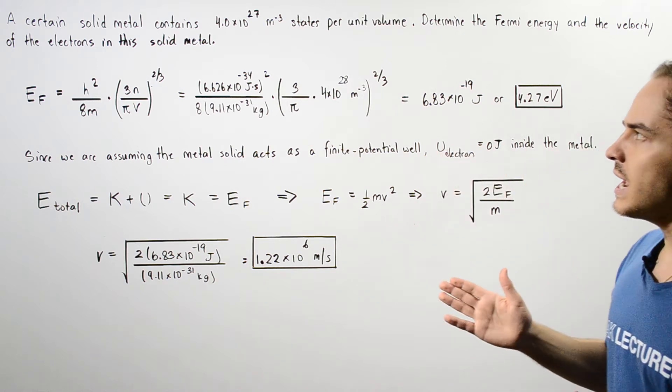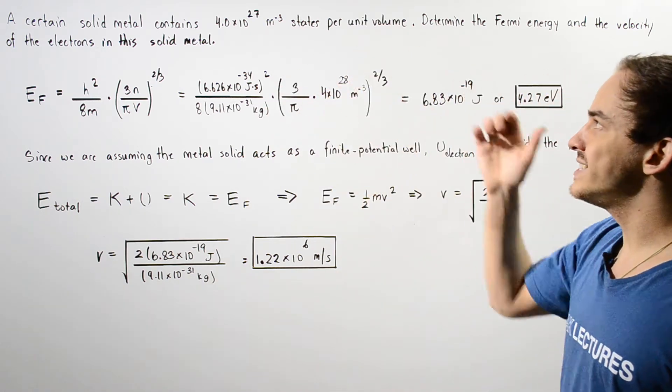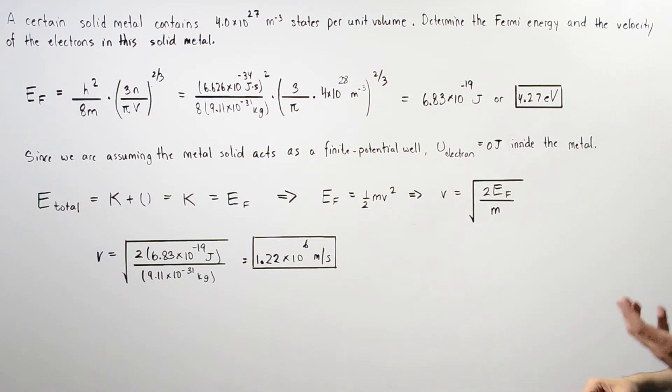A certain solid metal contains 4.0 times 10 to the 27 states per unit volume of that metal. Determine the Fermi energy and the velocity of the electron in this solid metal.